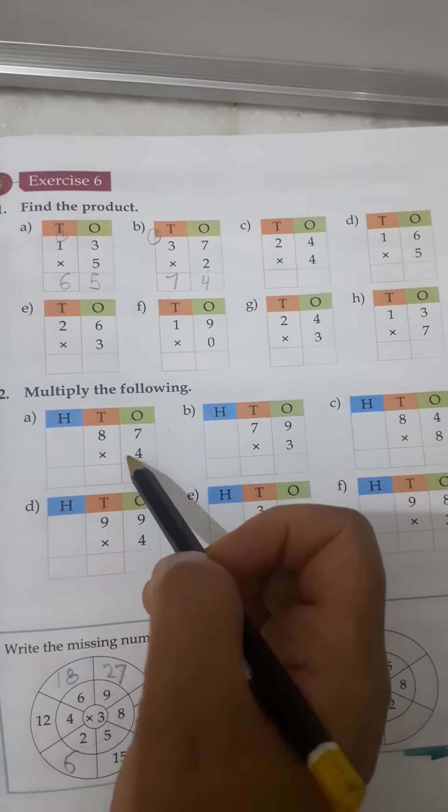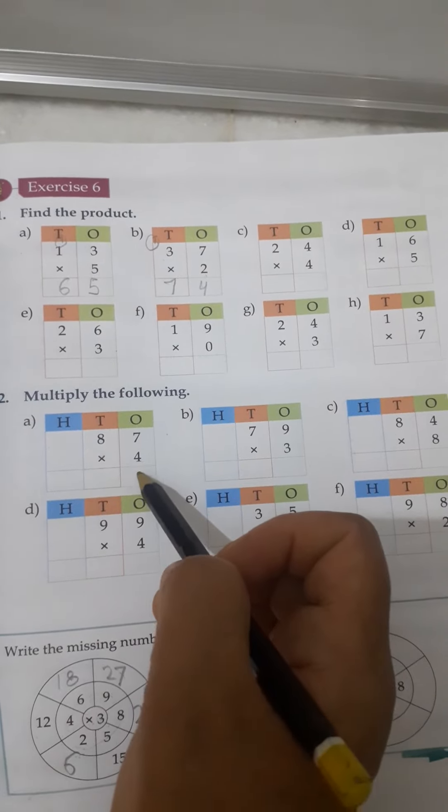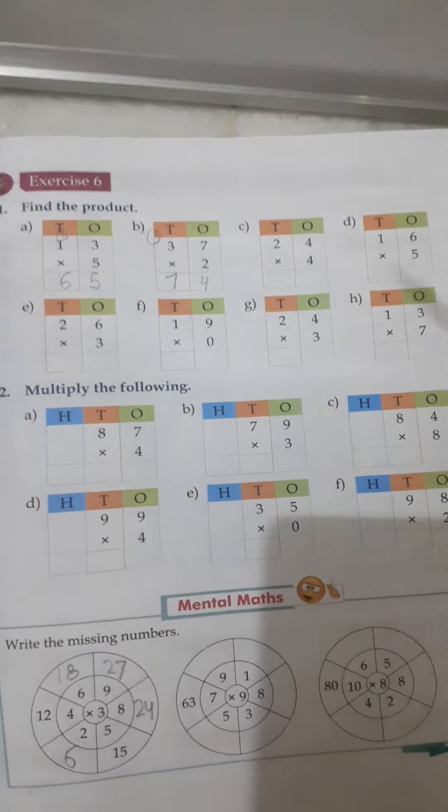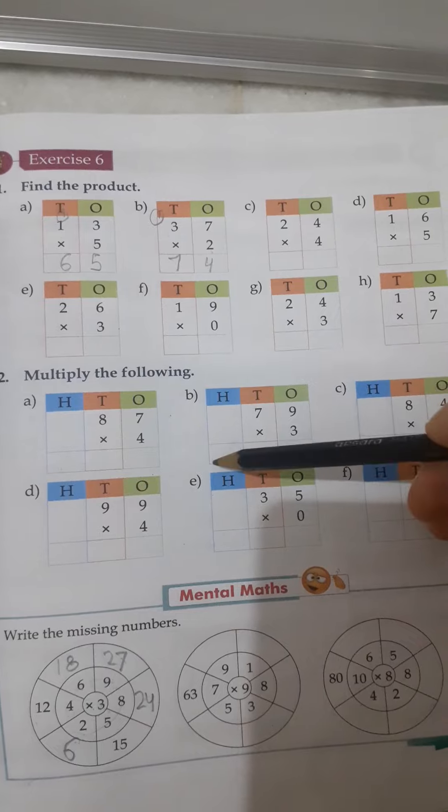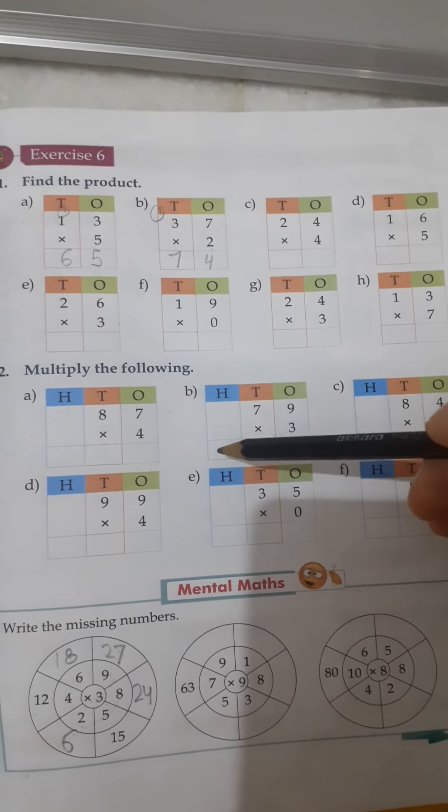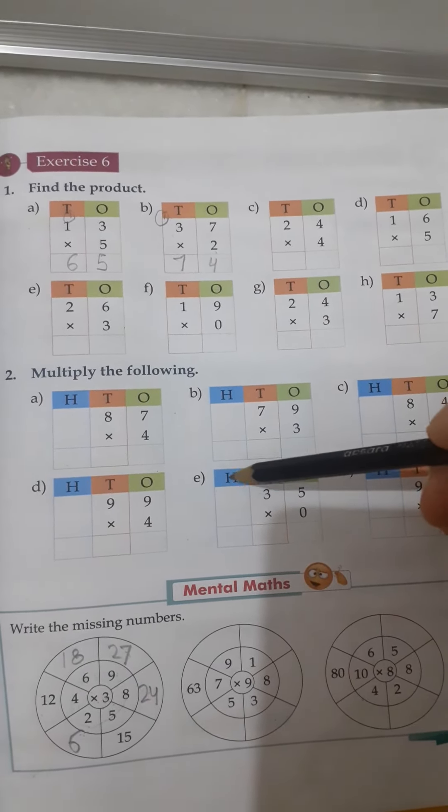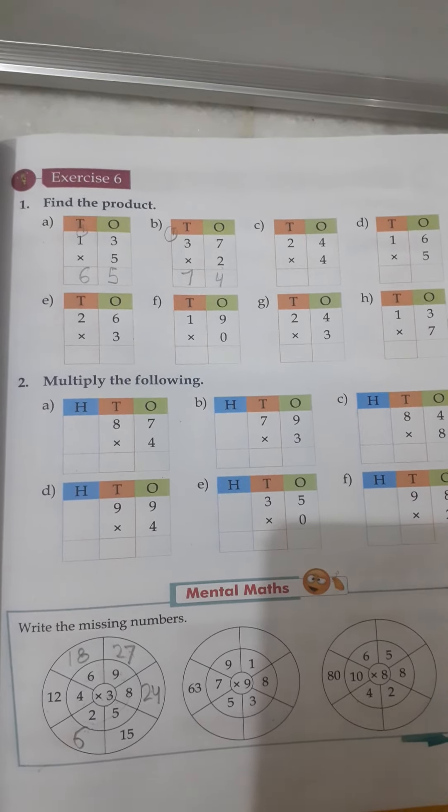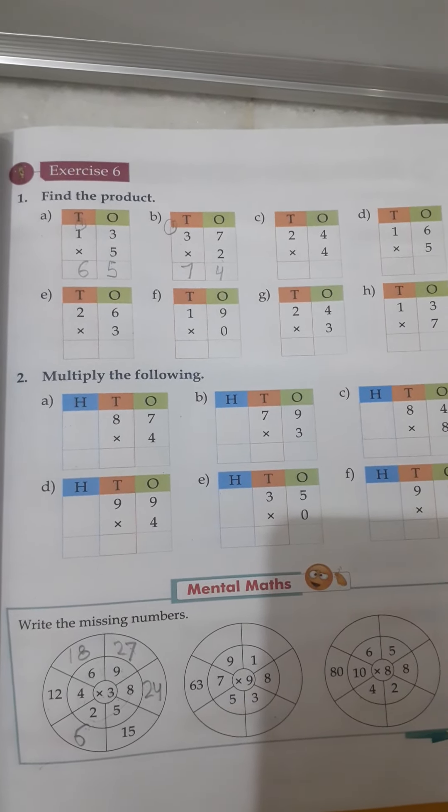But in question number 2 your answer should be in 3 terms like ones, tens and hundreds. So you will complete this question in the book and this one in the notebook. So take care everyone. Bye bye for today. I hope you will understand the 2-digit number multiplication.